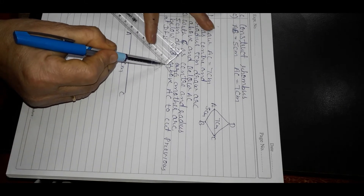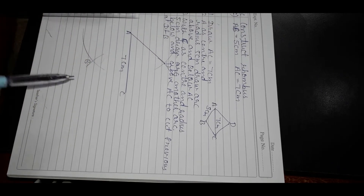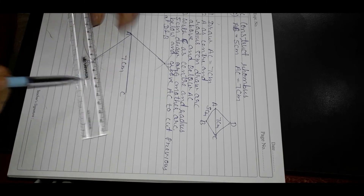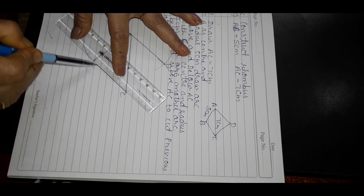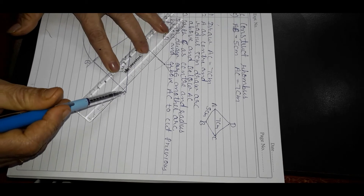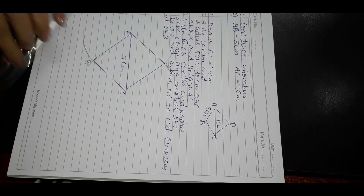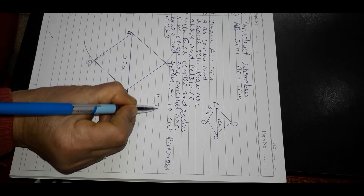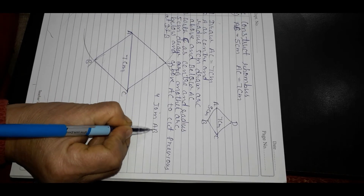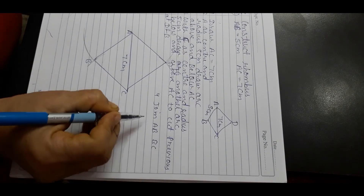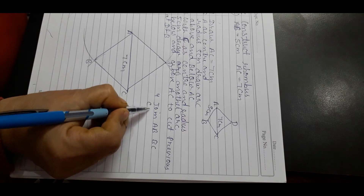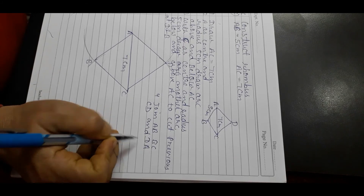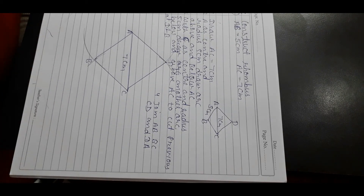Join AB, BC, CD and DA. Thus ABCD is the required rhombus.